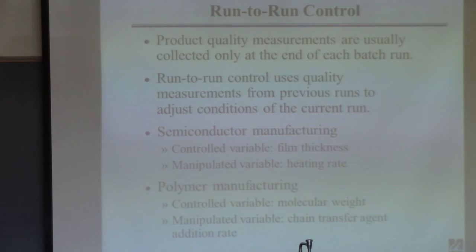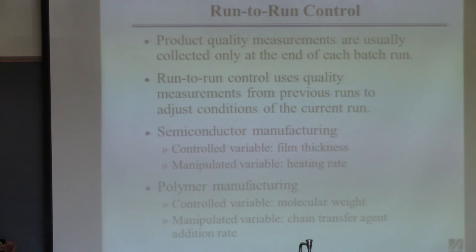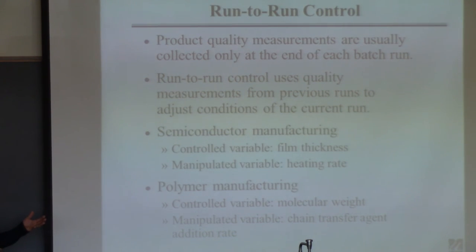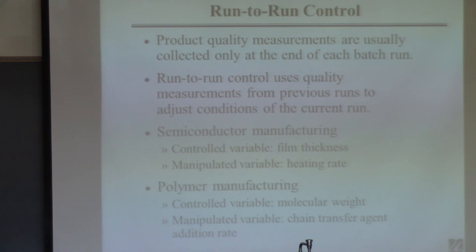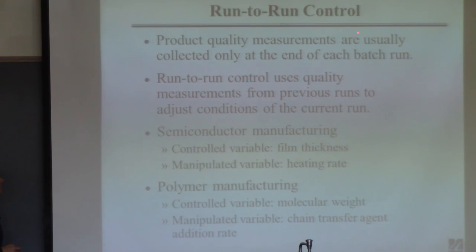This is very common in batch processes. You run a batch, take a sample during the batch, send it to a laboratory, and they come back and say your molecular weight is bad — but by then, your batch is done. Normally you don't even bother taking quality measurements during the batch. You run the batch, take samples afterward, run them to the lab, and figure out if it's okay. The first question is whether it's a good batch; the second question is how to improve the next batch. That's called run-to-run control.